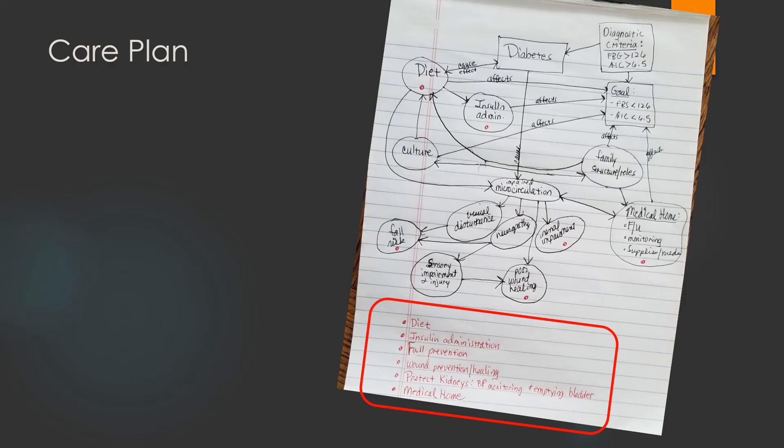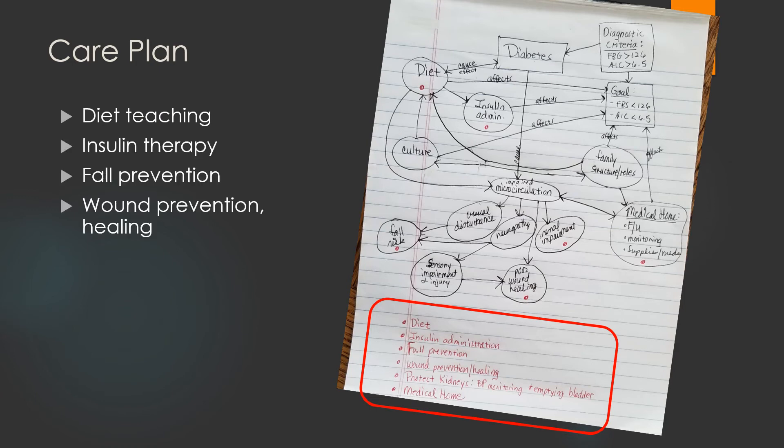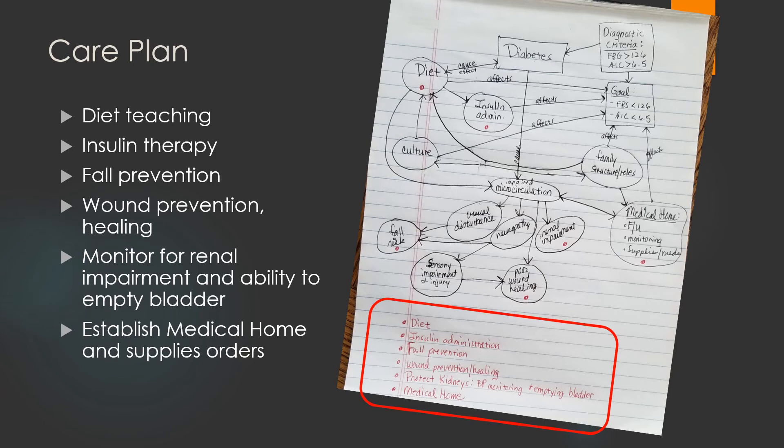Finally, I pulled together a care plan for my patient with diabetes that will inform nursing interventions. My interventions were about diet teaching, insulin therapy, fall prevention, wound prevention and healing, monitoring for renal impairment and ability to empty the bladder, and establishment of a medical home for supply orders.